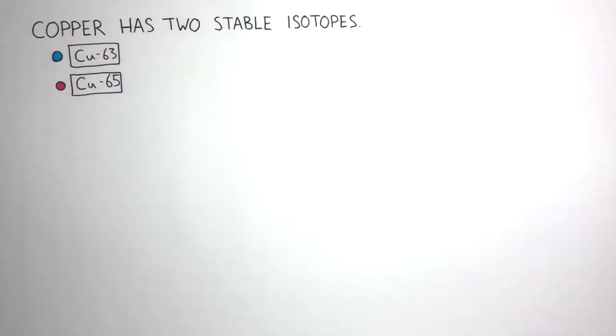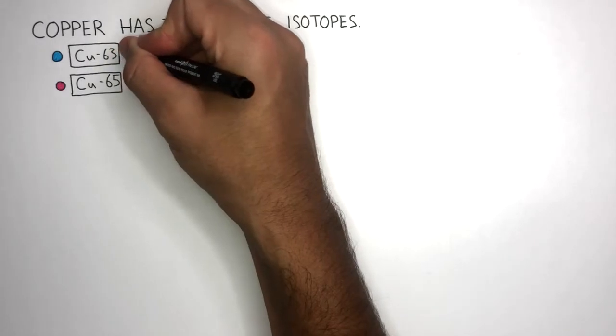The blue circles will represent Copper-63 atoms and the pink circle will represent Copper-65 atoms. In any sample of copper,